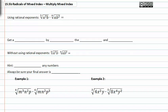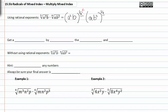We can rewrite this with exponents instead of indexes, where one-third represents the index and a squared times b represents what's inside. We can also write one-fourth as the exponent instead of an index, and ab squared represents what's inside. At this point, we need to find a common denominator. The common denominator between these two exponents would be twelve, so we'll build up the first by multiplying by four over four, and the second by multiplying by three over three.